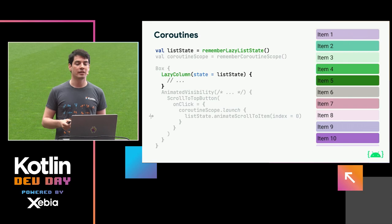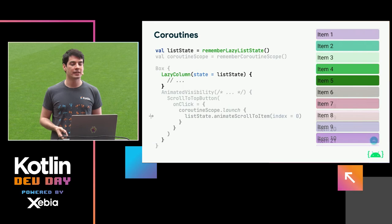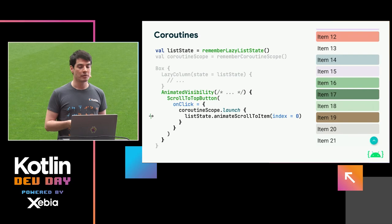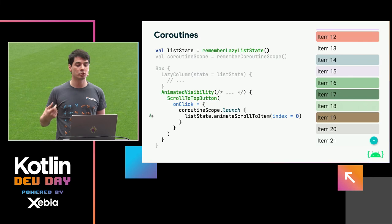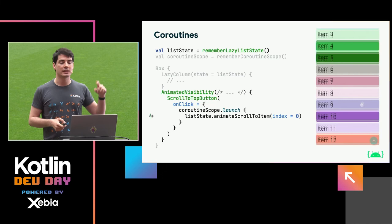Take for example a snippet that creates a list scene. The list itself is displayed with a LazyColumn component. Other than the list, we also have a scroll-to-top button — that button in the bottom right corner. Once that button is clicked, we launch a new coroutine and call animateScrollToItem on the list state, scrolling up to the top of the list. There's also a wrapper called AnimatedVisibility which makes sure the button is only shown when we've actually done some scrolling, so it's not visible when we're at the top.